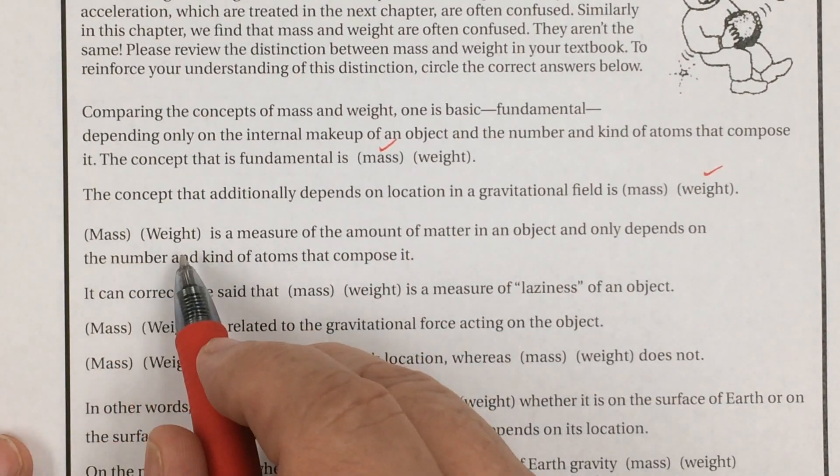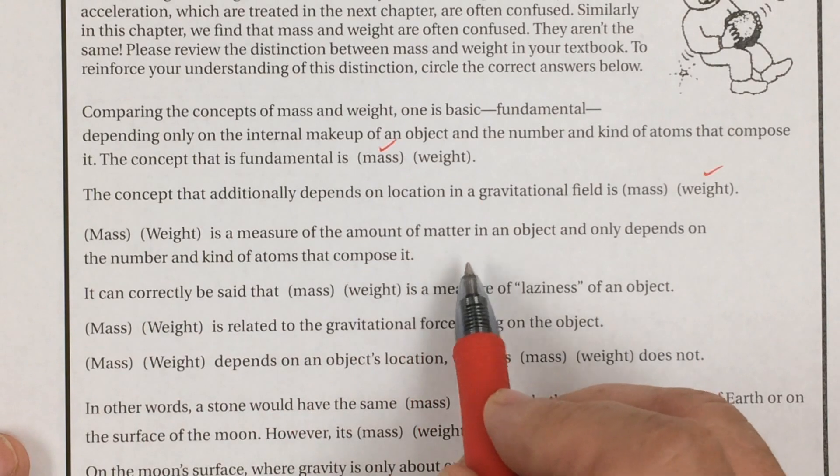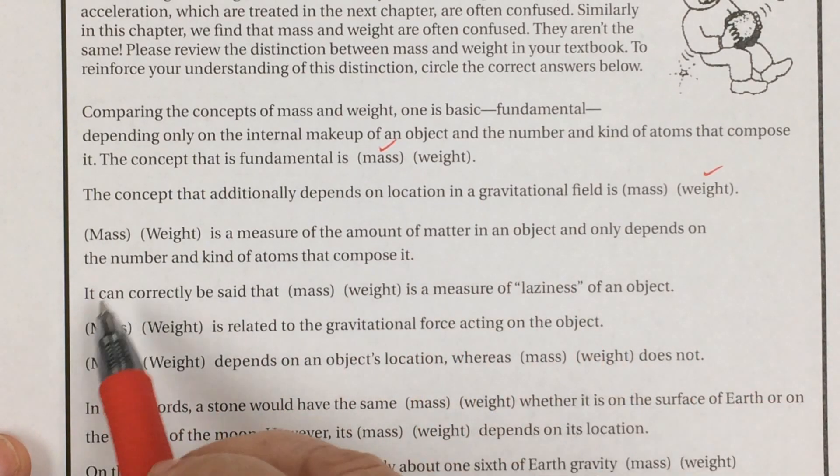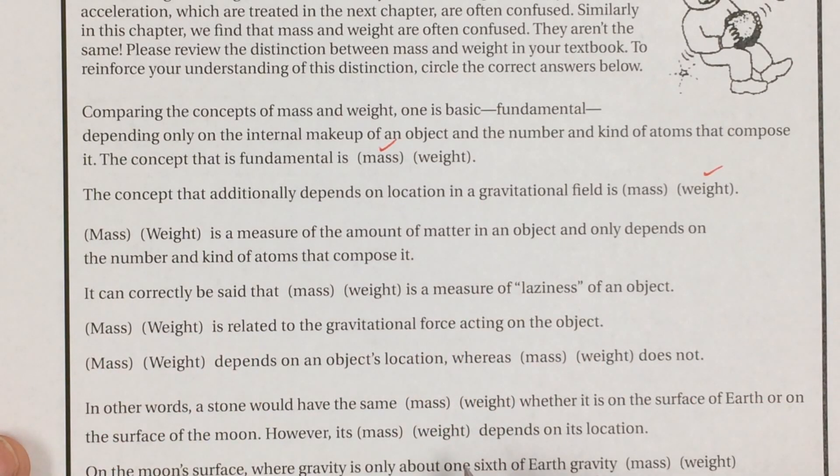I'd like you to do these ahead of me. So here's your choices. Mass and weight is a measure of the amount of matter in an object and only depends on the number and kind of atoms that compose it. That is your mass. Your mass is based on what it is that's in you and how many of those atoms there are.